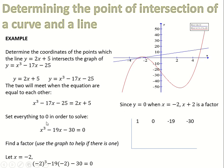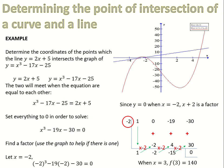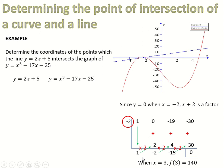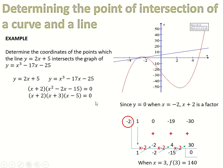Using synthetic division with coefficients 1, 0, minus 19, and minus 30, dividing by minus 2: 1 times minus 2 is minus 2, plus 0 is minus 2, times minus 2 is 4, plus minus 19 is minus 15, times minus 2 is 30, add minus 30 is 0. So when x equals minus 2, f of minus 2 equals 0. The quotient gives x squared minus 2x minus 15, which factorizes as x plus 3, x minus 5 equals 0, giving x equals minus 2, x equals minus 3, and x equals 5.